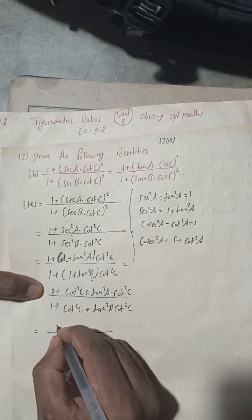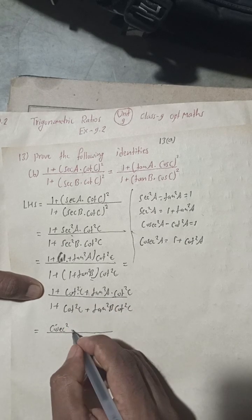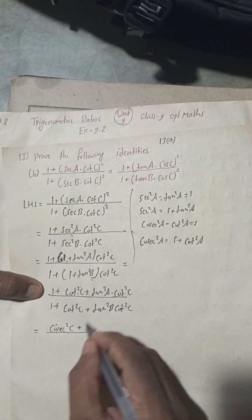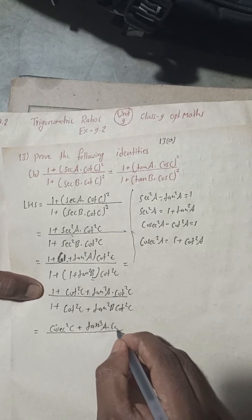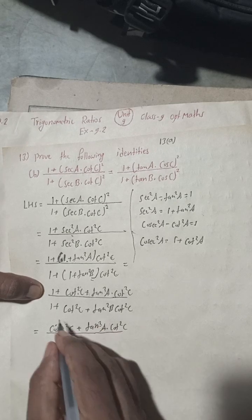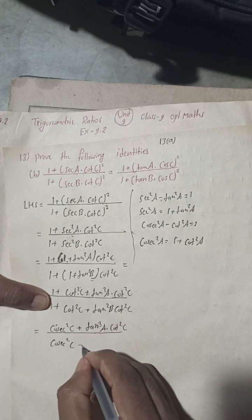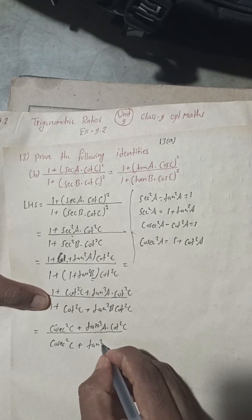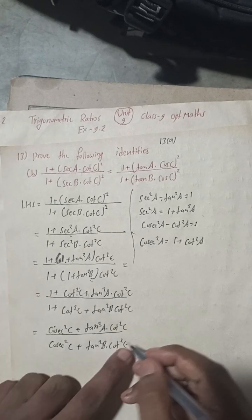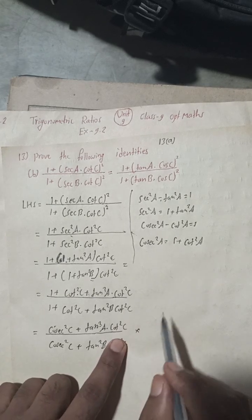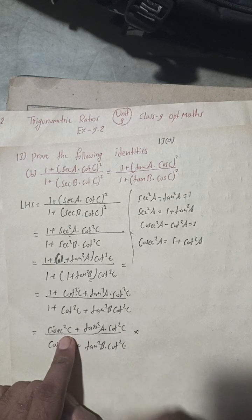So the expression becomes: cosec²C + tan²A · cot²C in the numerator, divided by cosec²C + tan²B · cot²C in the denominator. Now we need to simplify by using cosec²C = 1/sin²C.